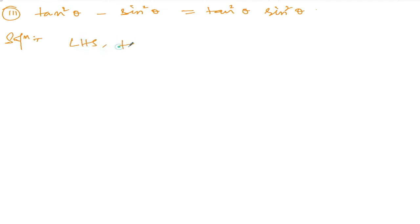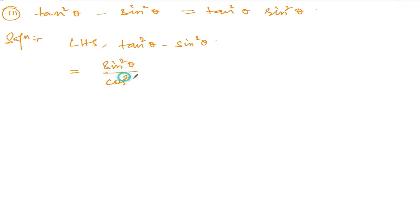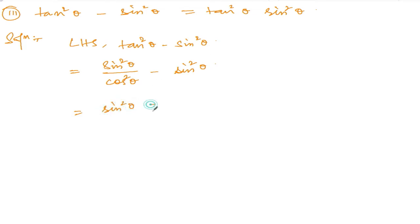Left hand side: tan square theta minus sine square theta. Now, tan square theta is sine square theta divided by cos square theta, minus sine square theta. So I can write sine square theta over cos square theta minus sine square theta, taking the denominator as cos square theta.